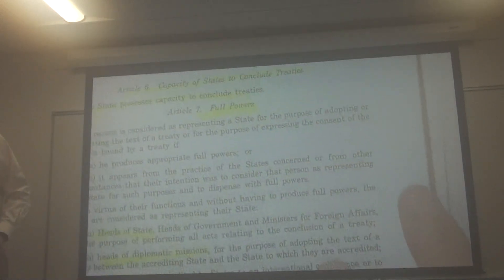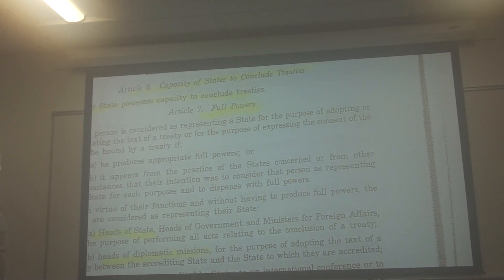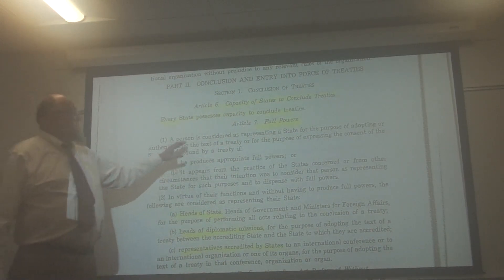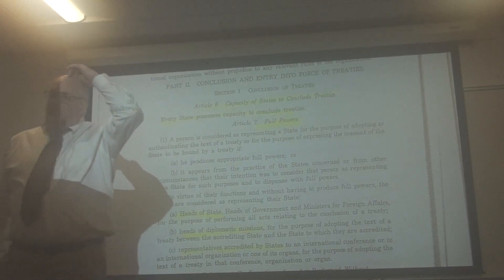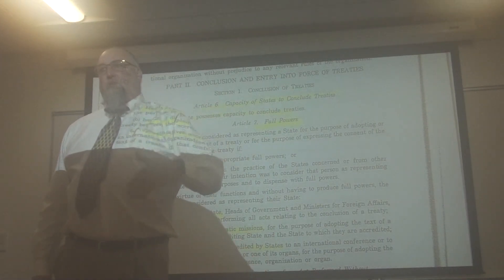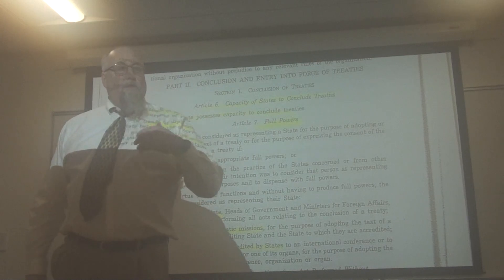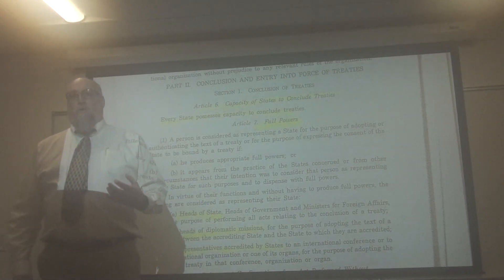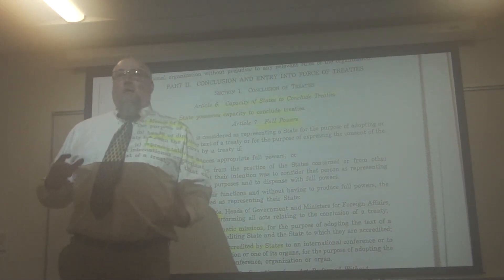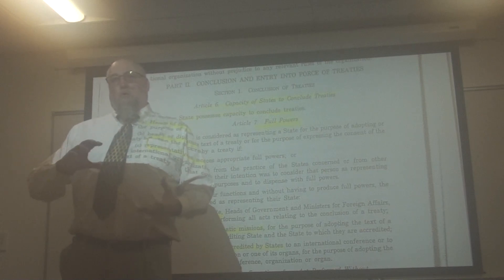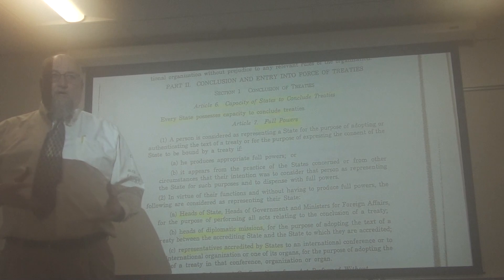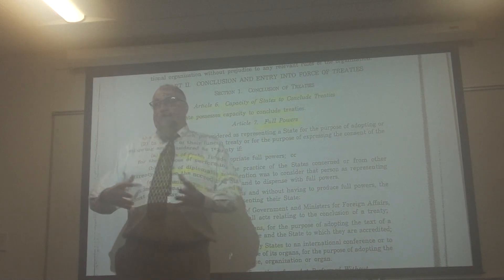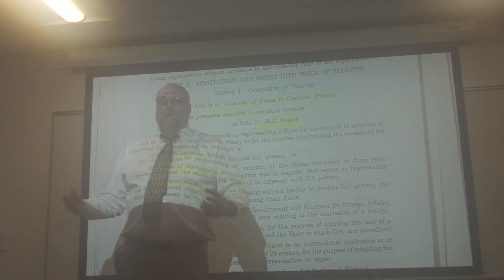Article 7 deals with 'full powers' — who has the authority within a state to enter into a treaty. This can be important in turbulent political situations where, for example, both a prime minister and someone claiming to be president exist. You must determine who has the authority to enter into a treaty on behalf of a sovereign, because once a sovereign enters into a treaty it is bound by it.